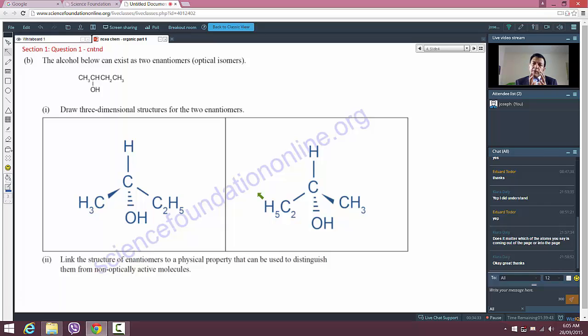If you have one only, it will rotate it maximum to the left or maximum to the right. If you have a partial mixture of unequal amounts, it will rotate it somewhat but not the full amount to the left or the full amount to the right.